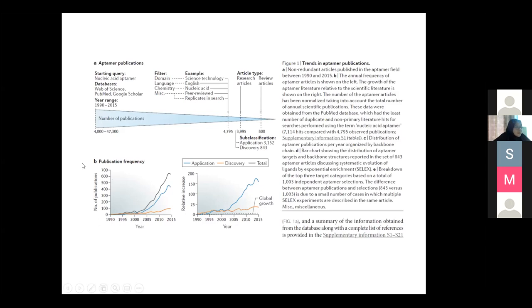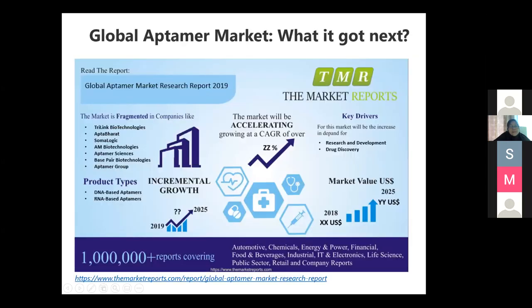The service to produce one single aptamer for one single target is very costly — very expensive. Last time it was around 10 million Korean won — more than 50,000 ringgit Malaysia — just to produce one single aptamer.